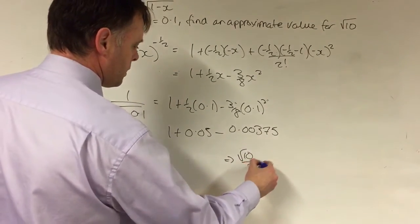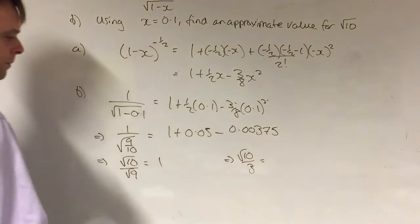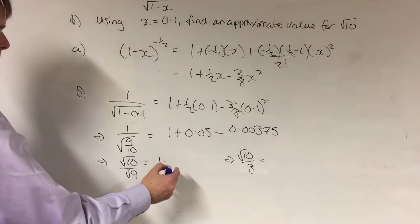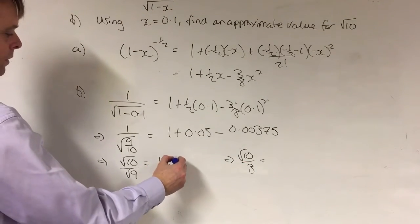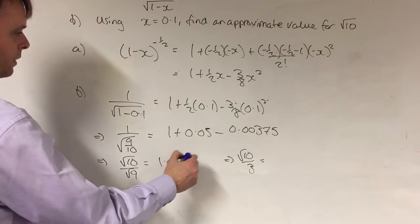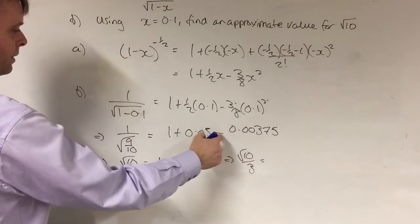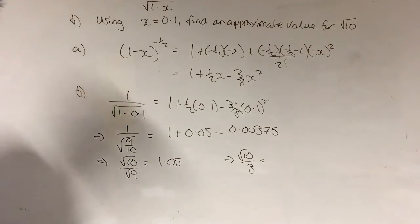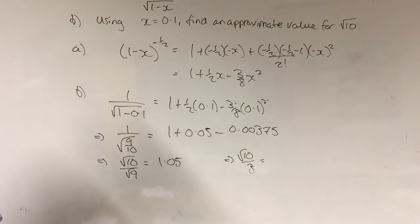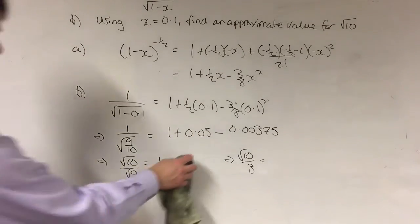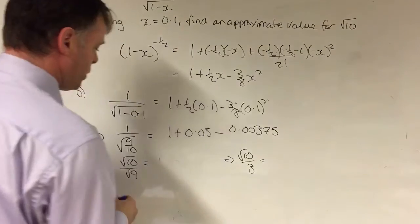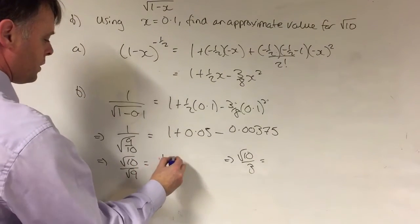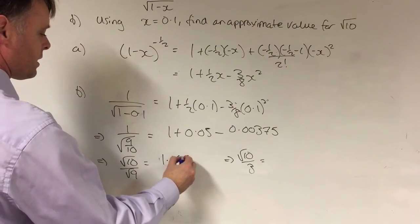The right-hand side equals 1.05 minus 0.00375 — we're taking away here, not adding. So going back and correcting that, the right-hand side is 1.04625. And the square root of 9 is 3, so we've got root 10 over 3 equals 1.04625.